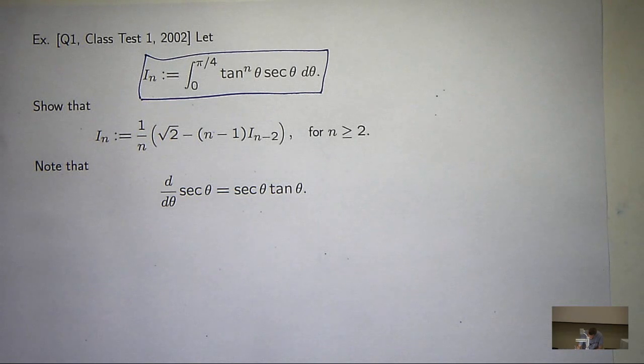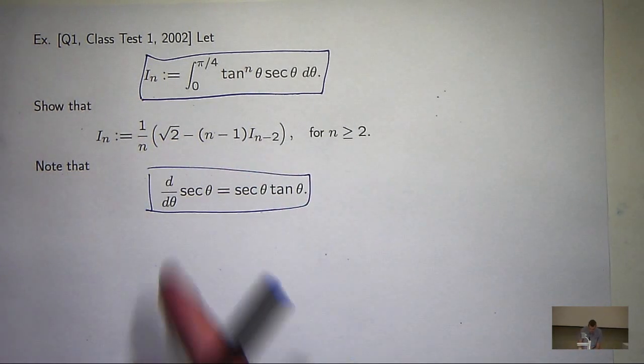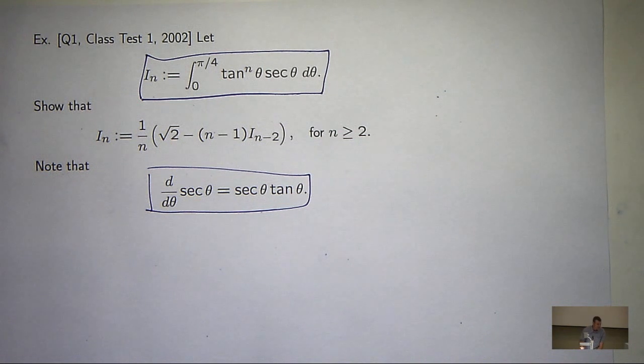You just kind of have to, so you actually know where you're headed with this question. Also, they've given you a nice little hint, just in case you've forgotten, about the relationship between sec theta and sec theta tan theta. Handy. So how do you do this problem?